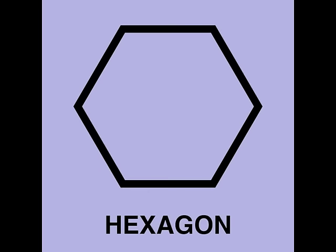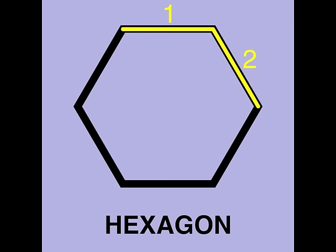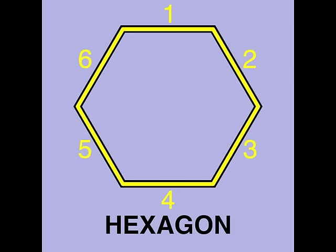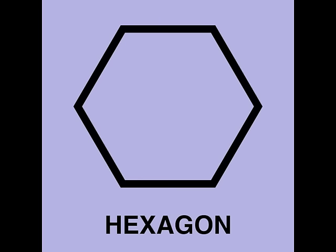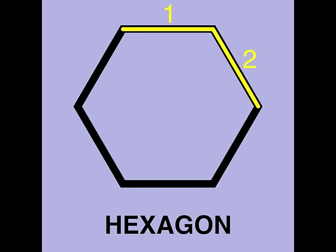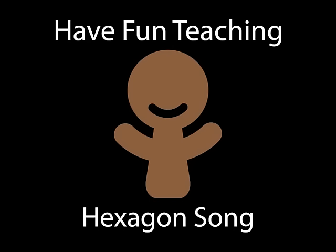A hexagon is a shape that has six sides. It is a polygon made up of six connecting lines. Thank you.